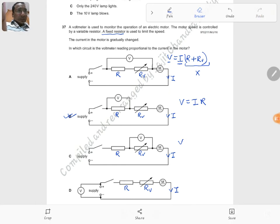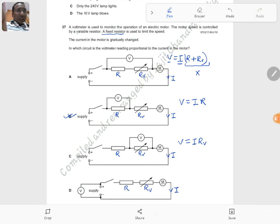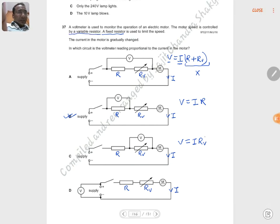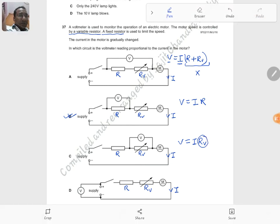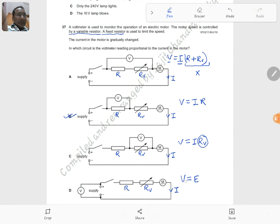But the question says that this is a variable resistor. Since this is variable, V and I cannot be directly proportional to each other. And in the last circuit, V is directly equal to the EMF of the source of supply.